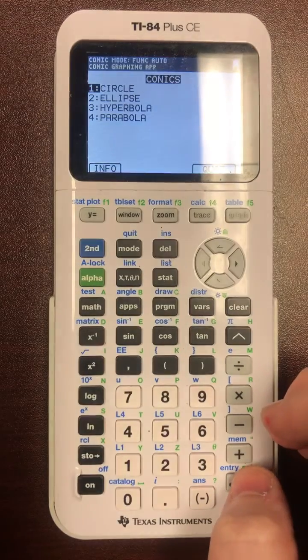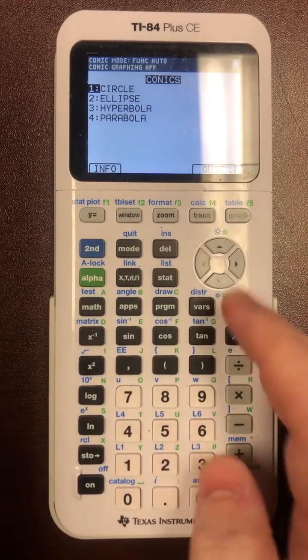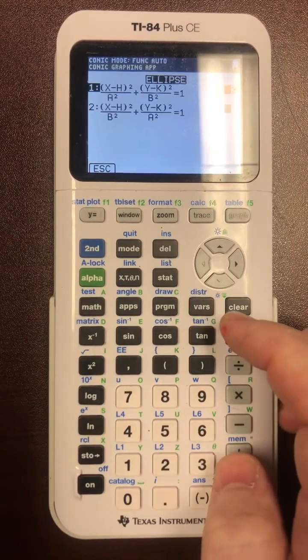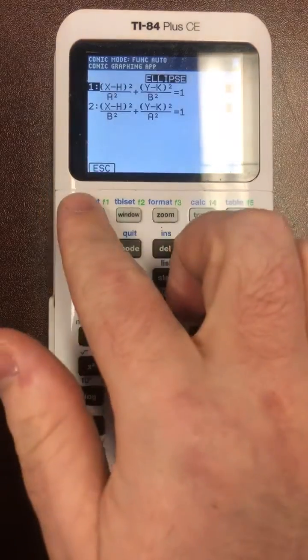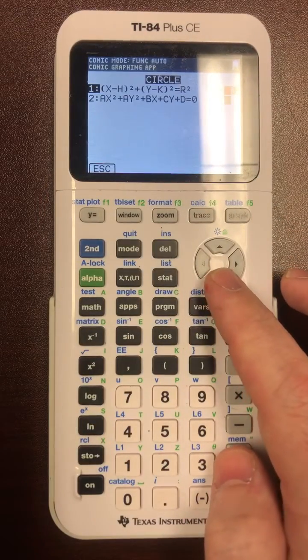This is good for two functions. One is what if you forget the formula of a certain conic section. It's there. So there's the two formulas for ellipse, the two versions of the formula for a circle, and so on.